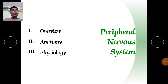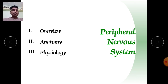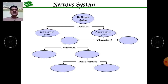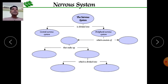Hello students, welcome back in another session of human physiology. My name is Dr. Ganesham Chawan. Today I will give a presentation on the peripheral nervous system. The nervous system can be divided into two types: first is the central nervous system and second is the peripheral nervous system. The central nervous system governs the brain and spinal cord.